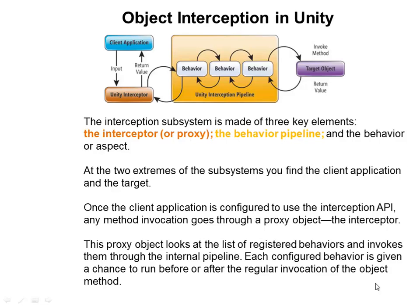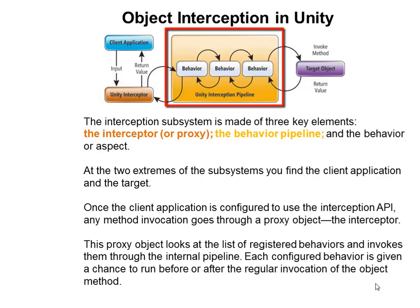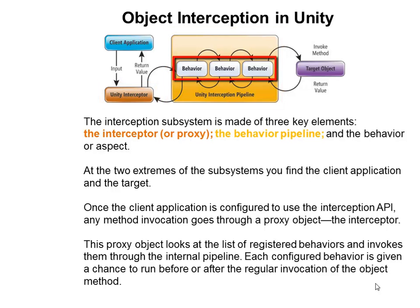In our next example we are going to use Unity to implement caching. The interception subsystem in Unity is made up of three key elements: the interceptor or proxy, the behavior pipeline, and the behavior or aspect.